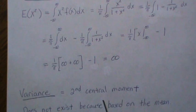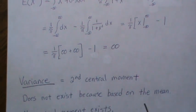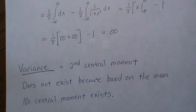So the variance is the second central moment and so it does not exist because it's based on the mean. In fact, no central moment exists.